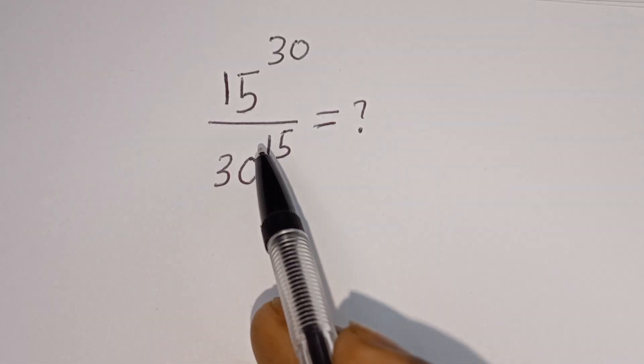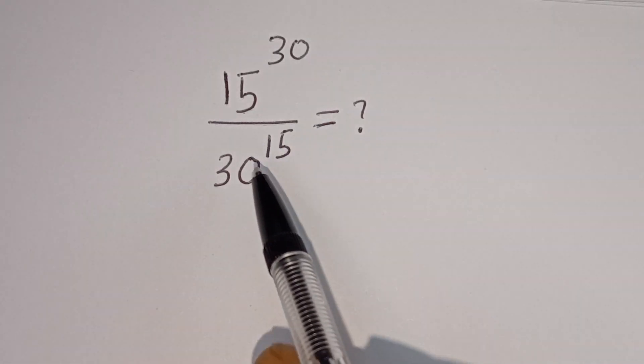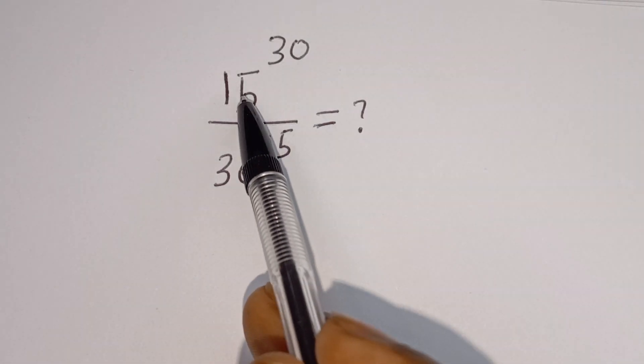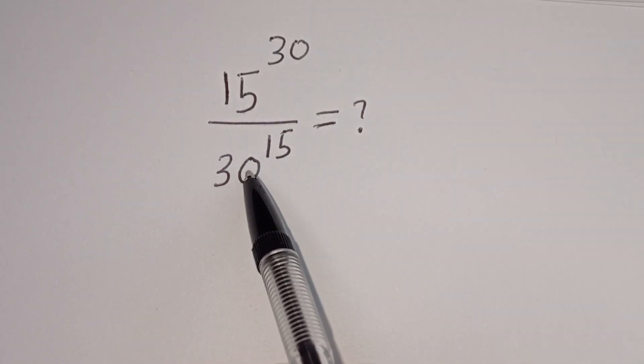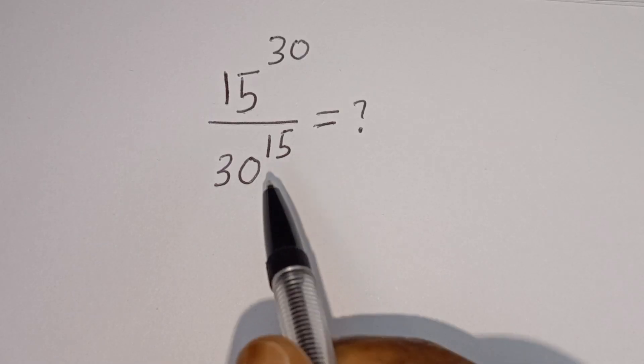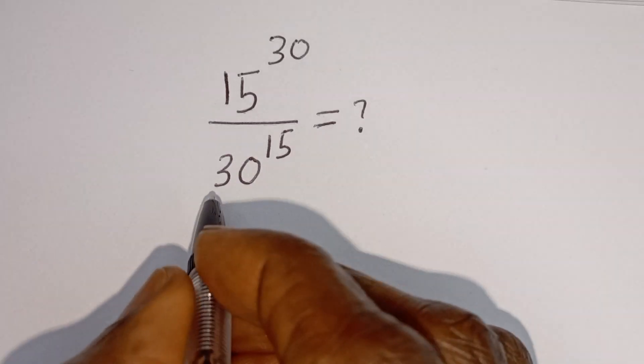Hello. How to simplify this nice math problem without using a calculator: 15 to the power of 30 divided by 30 to the power of 15. Solution.